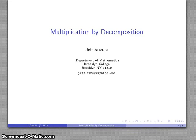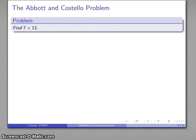Alright, let's take a look at another way of performing multiplication by what we might call decomposition. And a good example of this is what I sometimes call the Abbott and Costello problem: find 7 times 13.